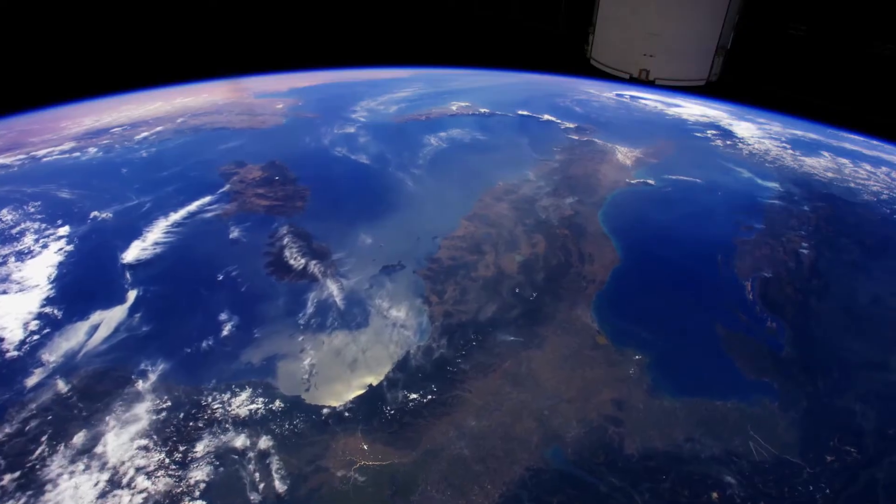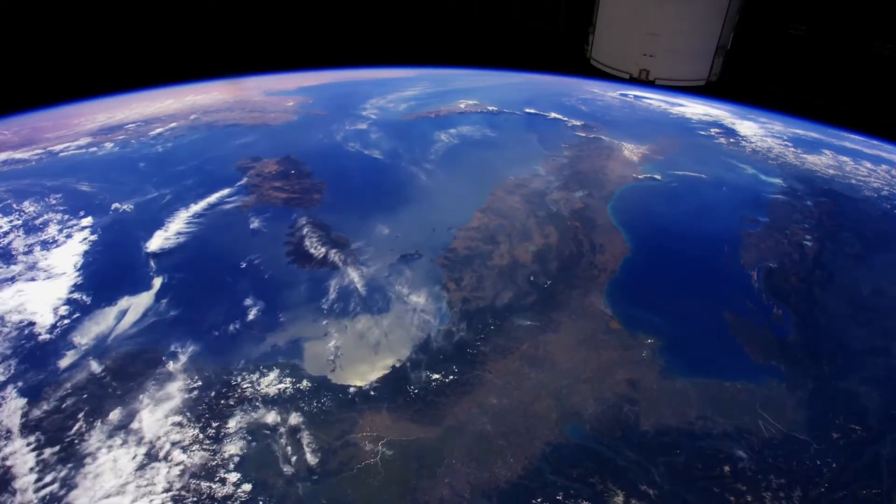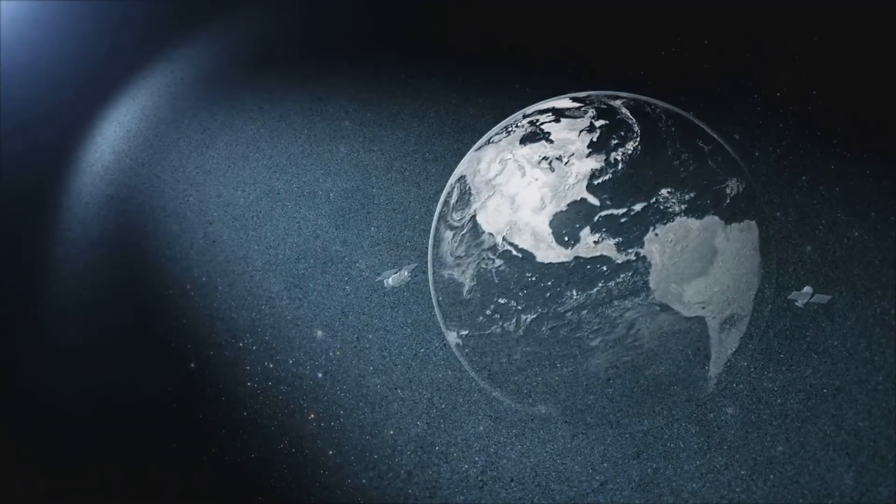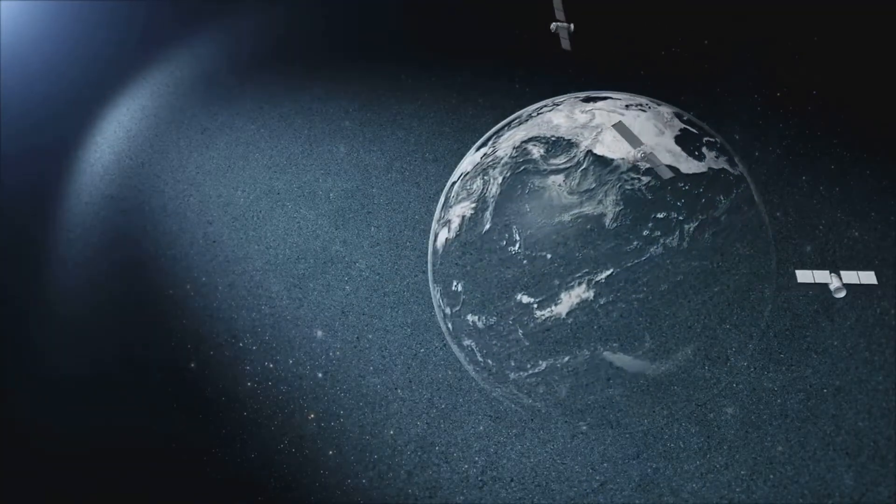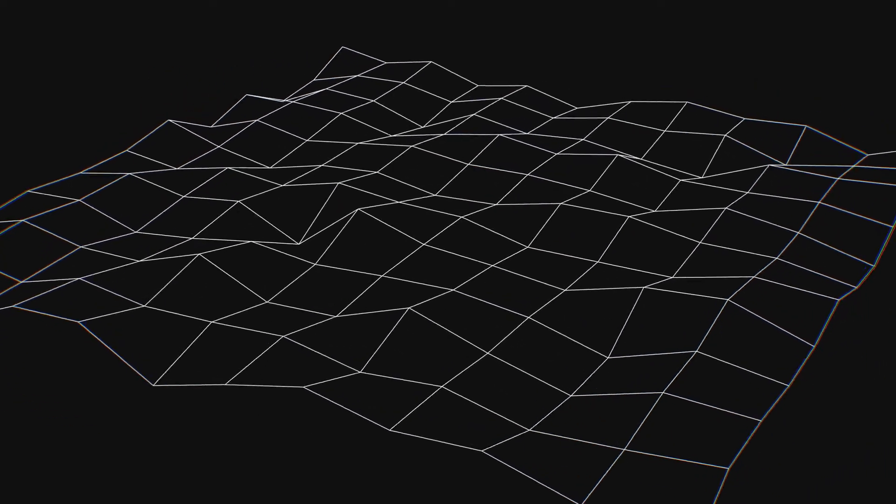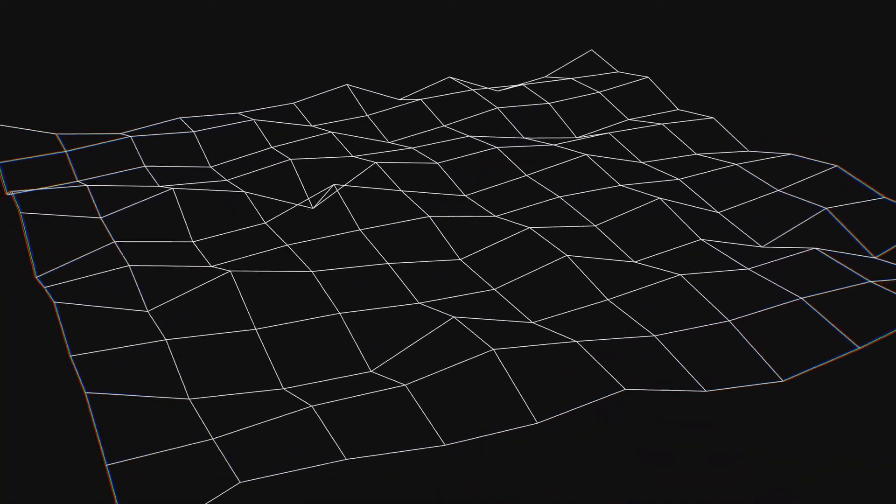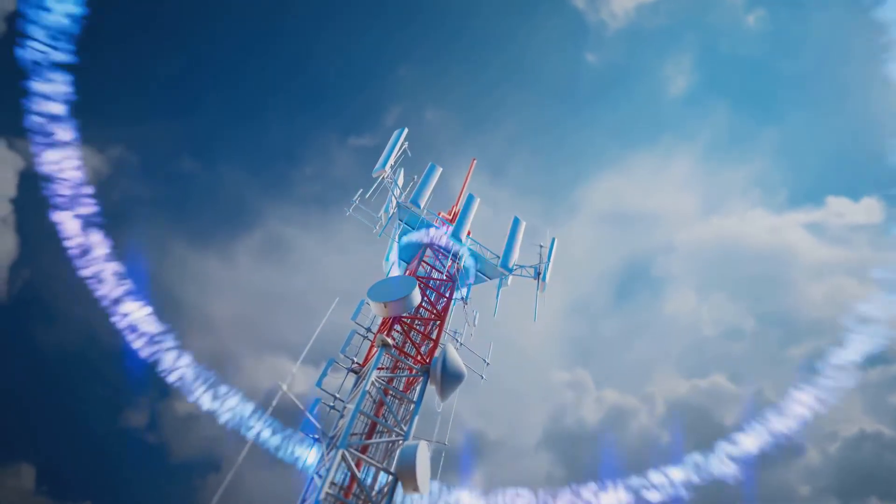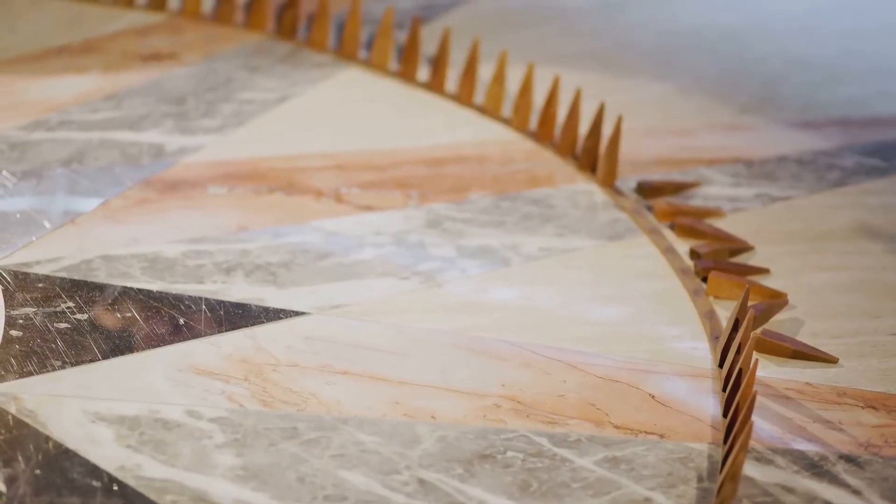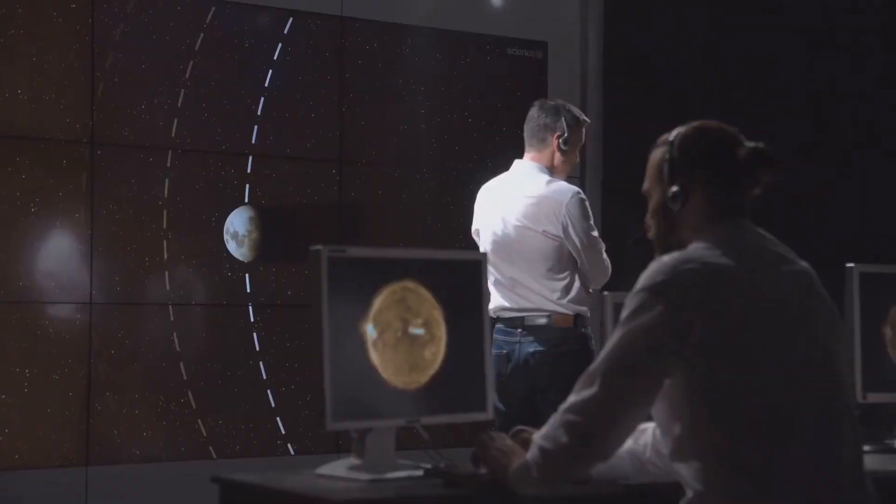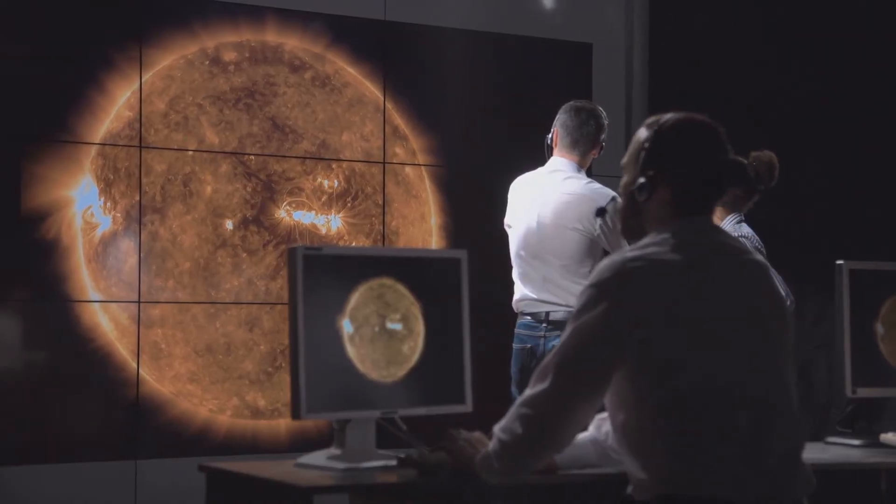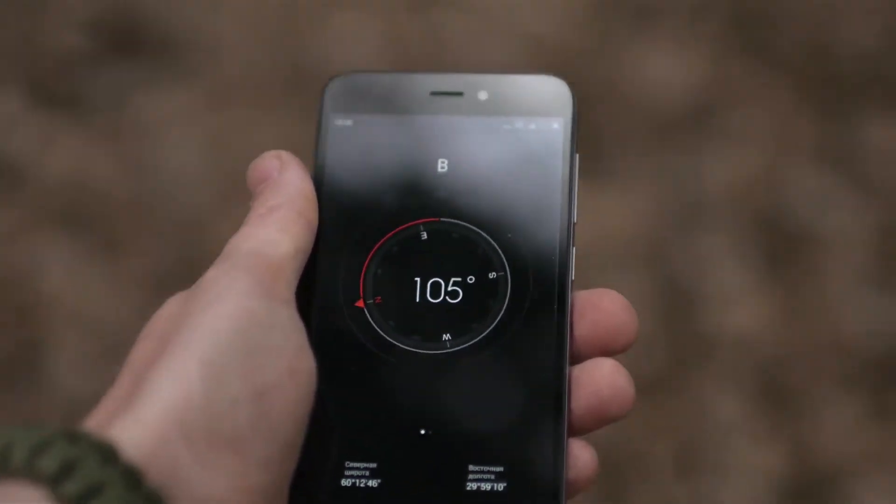The curvature of oceans isn't just observable, it's measurable. Satellite radar altimetry used in missions like Topex Poseidon measures ocean surface height with millimeter-level precision. These datasets match the globe model perfectly. GPS dropouts in valleys are due to line-of-sight occlusion, not a lack of satellites. It's the same reason your mobile signal cuts out in a tunnel. As for Earth's spin, it's measured constantly. The Foucault pendulum demonstrates axial rotation. Gyroscopic sensors in aircraft and ballistic missile systems require compensation for Coriolis forces. Even your phone's accelerometer detects inertial shifts.